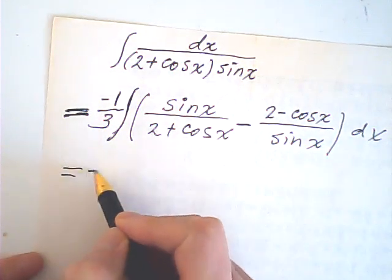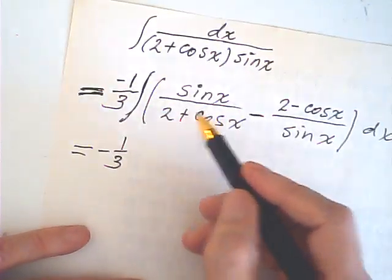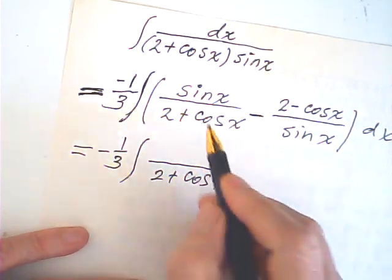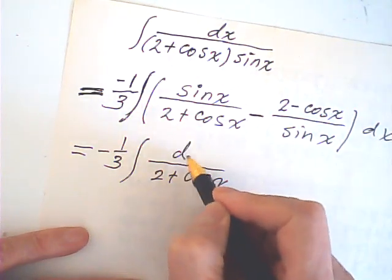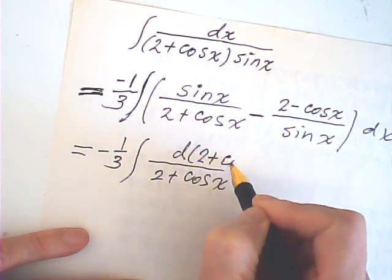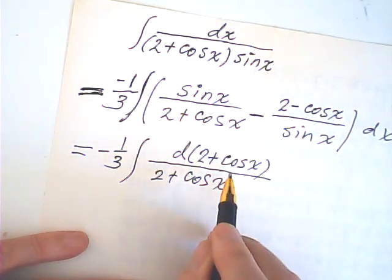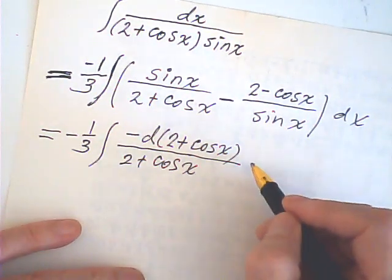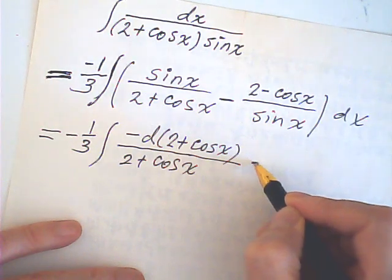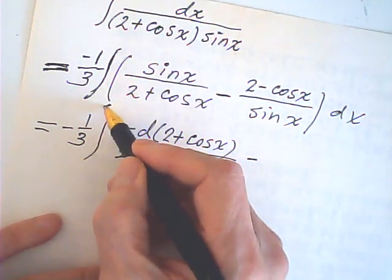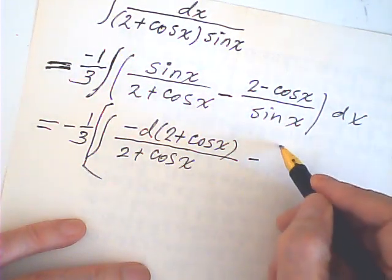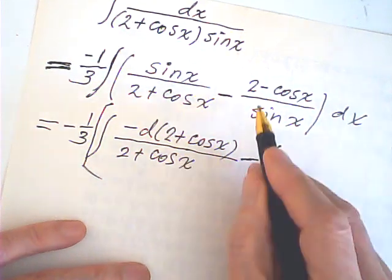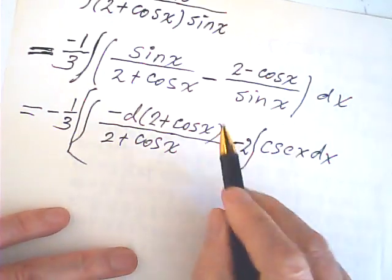So this one is equal to now one third of this integral. This is 2 plus cosine x, and sine x of dx is d(2 plus cosine x). This is a negative sine x dx. I have a positive, so it's easy to put the negative here. And minus, we're going to put a one third out. And this is integral 2 out. This is a cosecant, cosecant x dx. That's the second one.